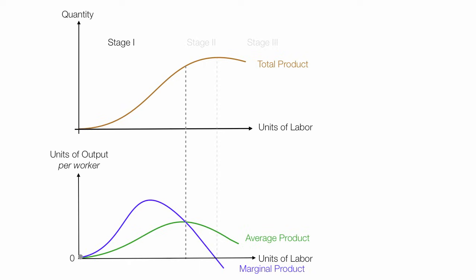Stage one is increasing average product, where marginal product is greater than average product. Stage two is decreasing average product, but I still have a positive marginal product. Stage three is a decreasing total product and a negative marginal product.